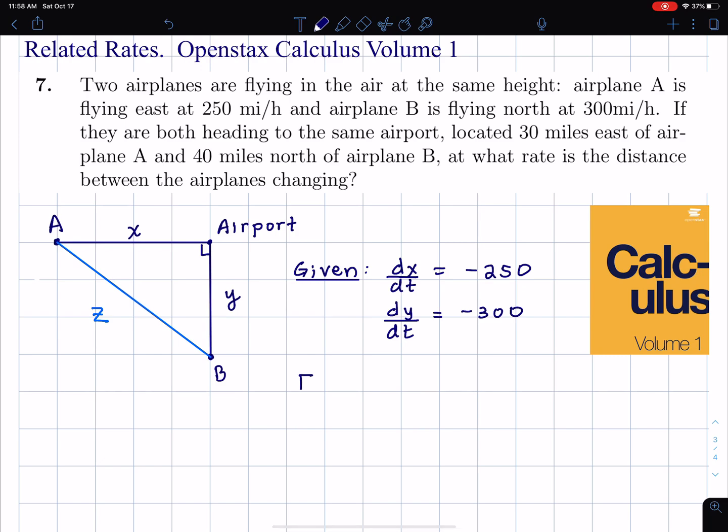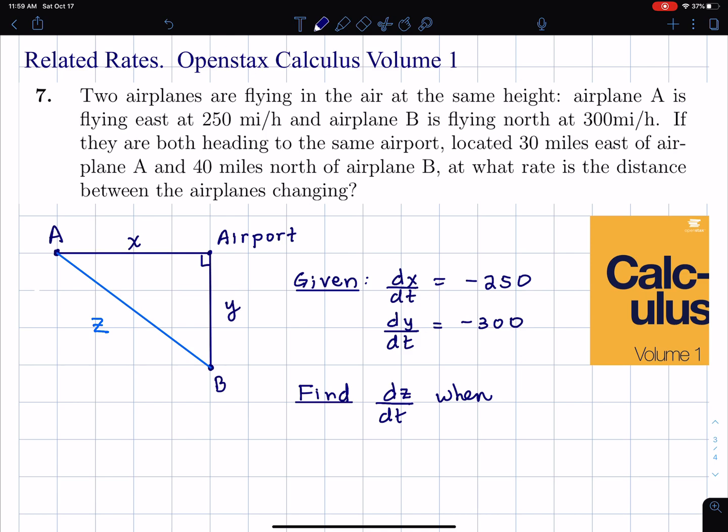We're going to find the rate of change of Z, which is the distance between these, when A is 30 miles east of the airport. When x is 30 and y is 40, we're trying to find dz/dt. dz/dt will be negative because Z will also be decreasing. We'll get that answer and take the absolute value and say that's the speed.